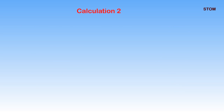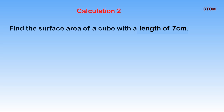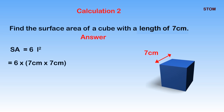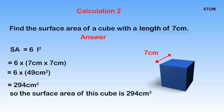Let us consider a second example: find the total surface area of a cube if the length is 7 cm. We recall that the total surface area of a cube is 6L squared. This means we multiply 6 by 7 by 7. Simplifying, we get 6 multiplied by 49, because 7 multiplied by 7 gives 49. Working further, 6 multiplied by 49 gives us 294 cm squared. Therefore, the total surface area of a cube with length 7 cm is 294 cm squared.